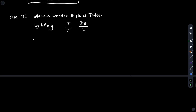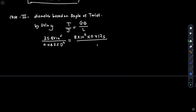Now apply the angle of twist condition using T/J = Gθ/L. Substituting values: T = 35.8×10⁶, J = 0.0855D⁴, G = 8×10⁴ N/mm², θ = 0.01750 radians, and L = 2500 mm.